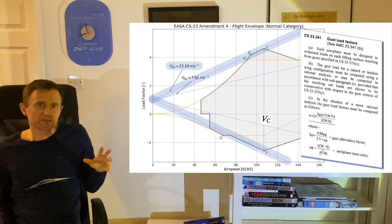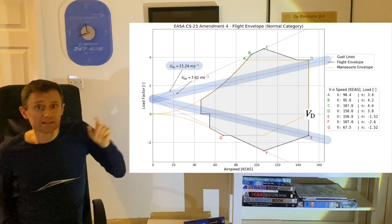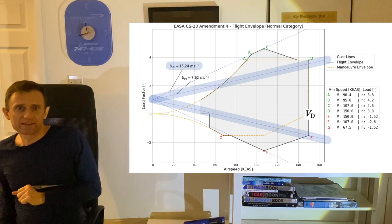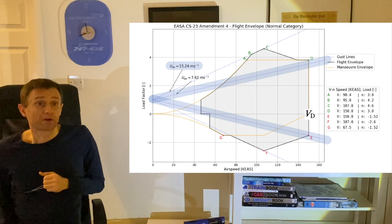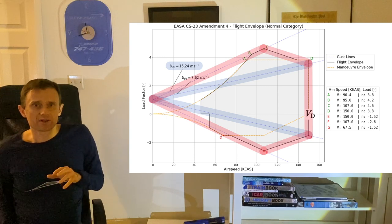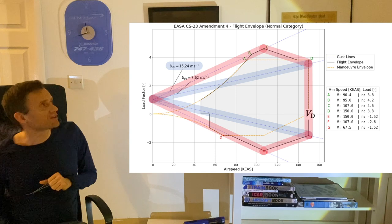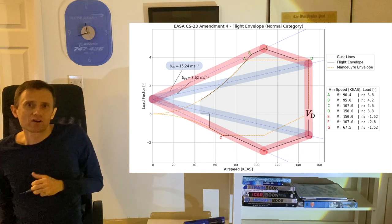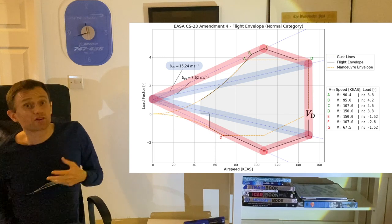Similarly, positive and negative gusts of 25 feet per second at VD must be considered at altitudes below 20,000 feet, which yields the next pair of gust lines. Finally, all four lines are trimmed at VC and VD as appropriate, and the end points of the positive pair and the negative pair are connected with straight lines as per the last paragraph of 23.333.